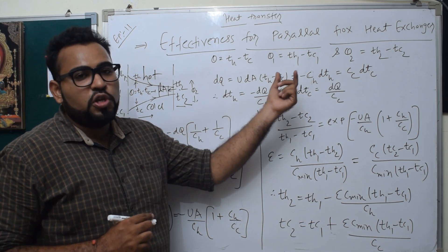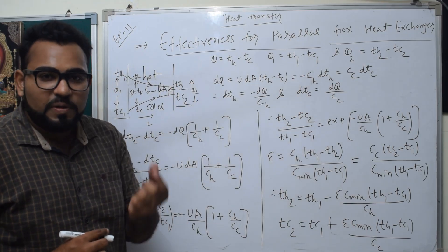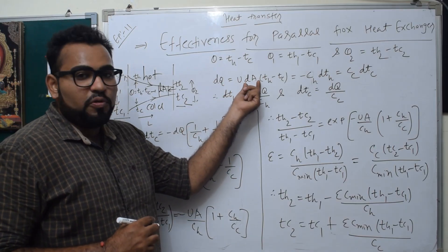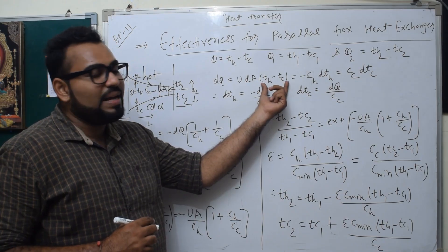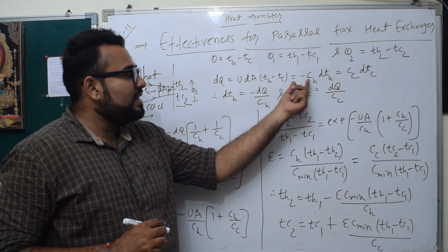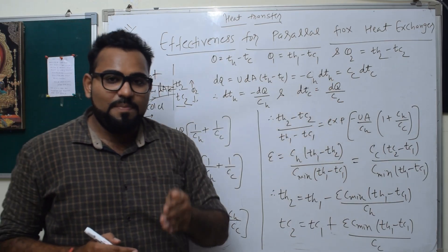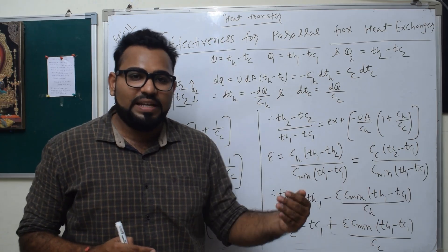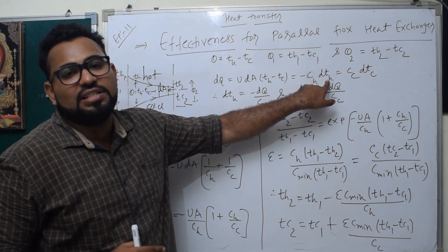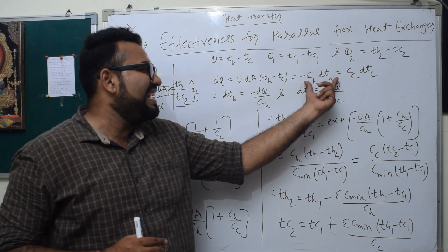For heat transfer, we know Q equals U·A·θ. For the small element, we write dQ equals U·dA·(Th minus Tc). This is also equal to the hot-side heat capacity rate Ch times dTh, where Ch equals the mass flow rate mh multiplied by the specific heat Cph. This product is called the heat capacity rate Ch.